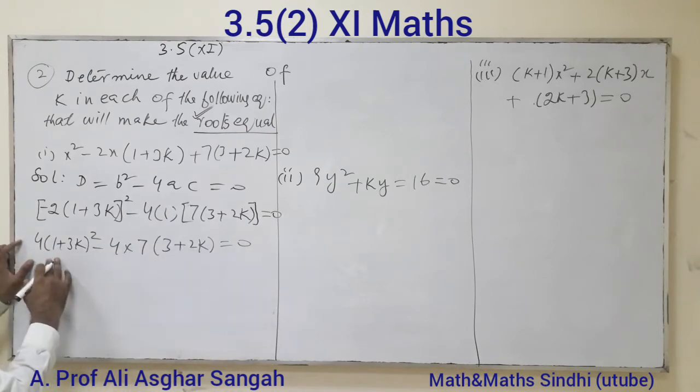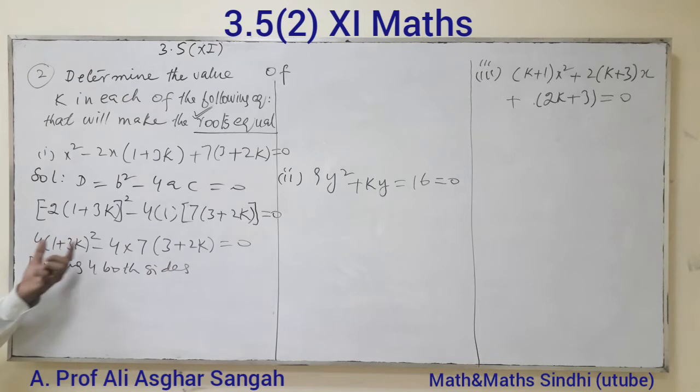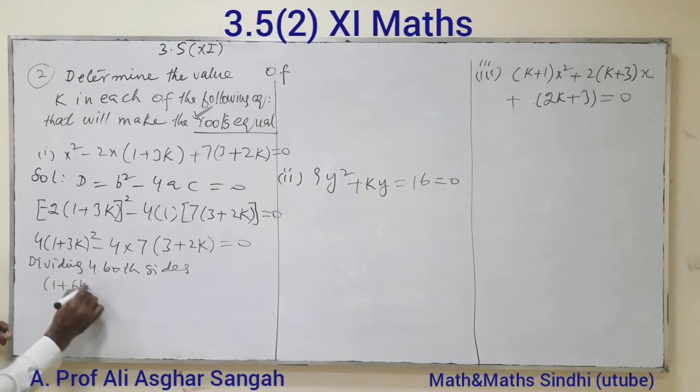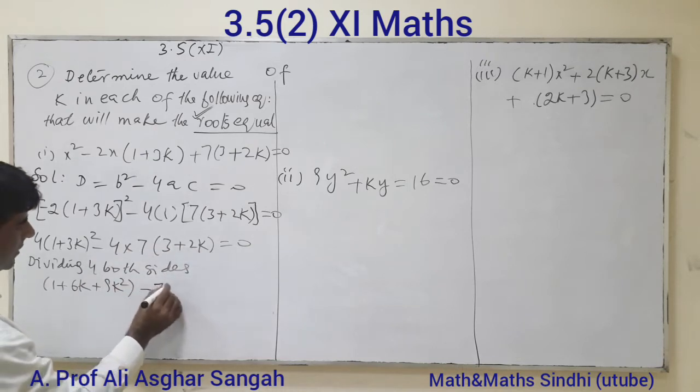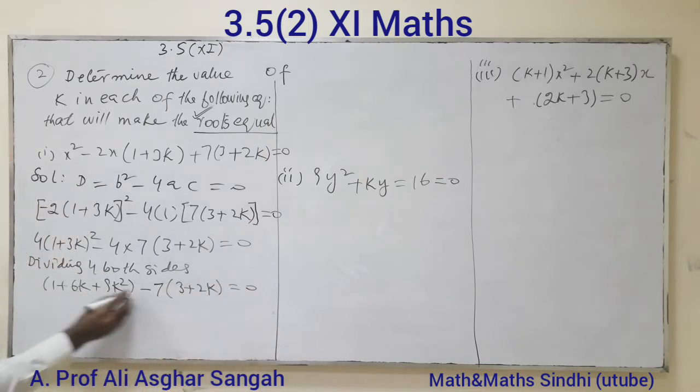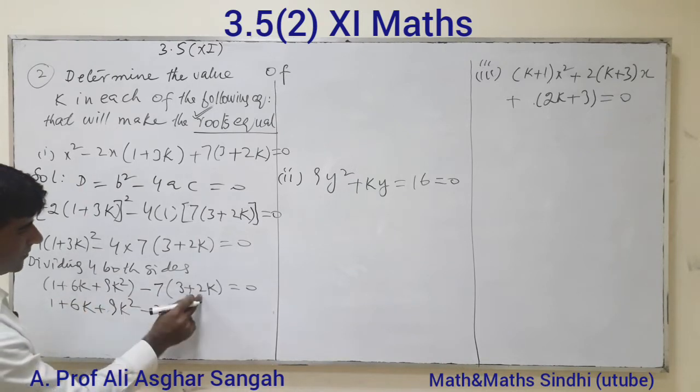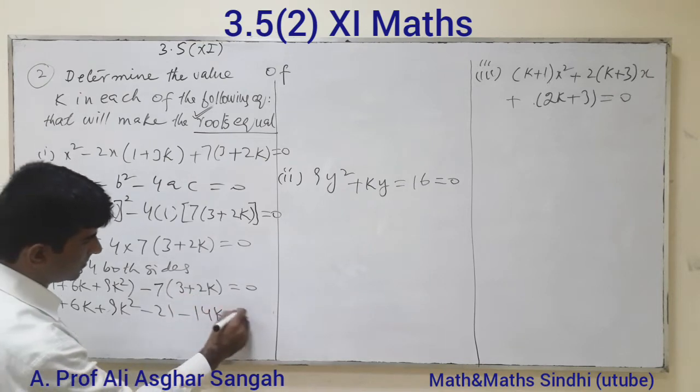Dividing both sides by 4 and solving: 1 plus 6K plus 9K squared minus 7 times (3 plus 2K) equals zero. Separating the terms: 1 plus 6K plus 9K squared minus 21 minus 14K equals zero.